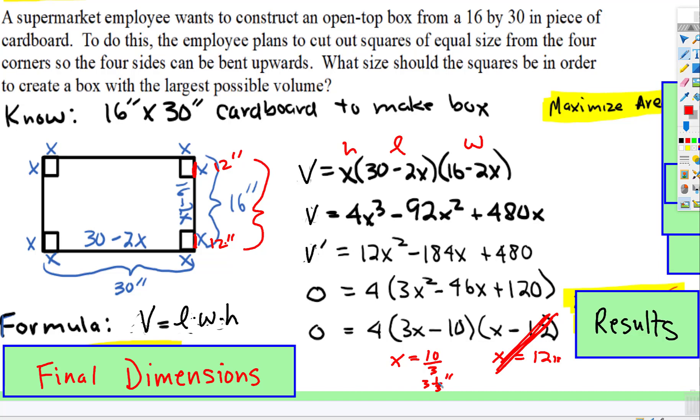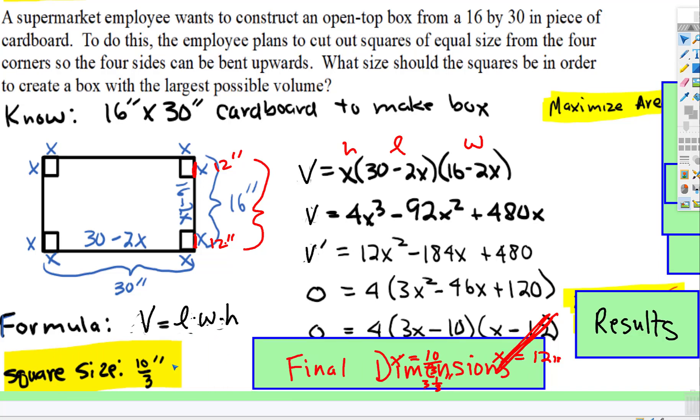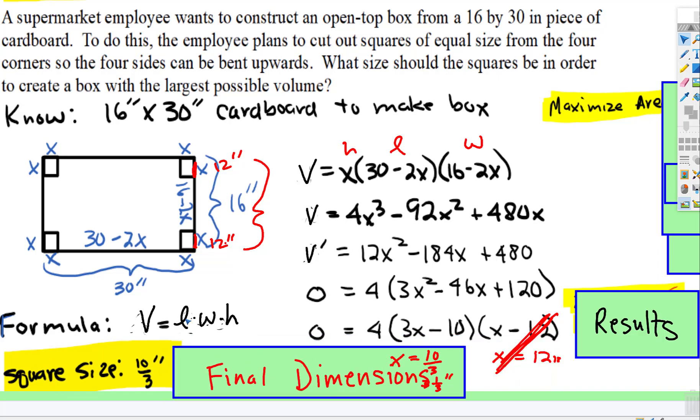So, the height is going to be 3 and a third inches. So, our final dimensions will be, oh, the square size. See, we need to maximize the volume, but the question is asking, what size should the squares be? Well, the squares would be, each side would be 10 thirds inches, or 3 and a third inches. There you go. That's it for this one.